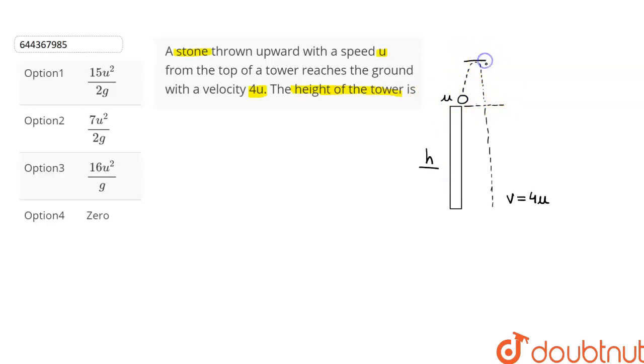After reaching a maximum height, this will start to fall down. And when it reaches this point, which is equal to the height of the tower, the velocity of the stone will be equal to u. So from this point we can see that the initial velocity of the stone is u and the final velocity is 4u.